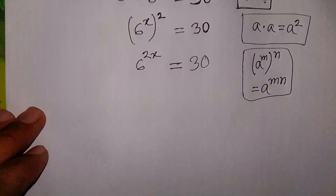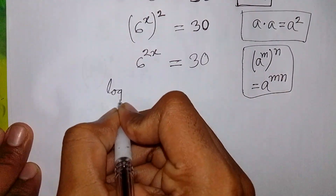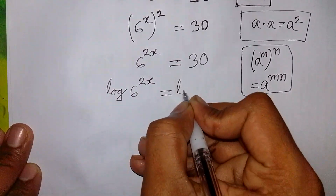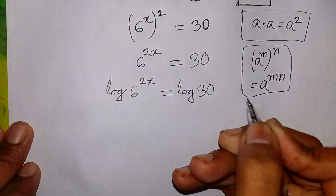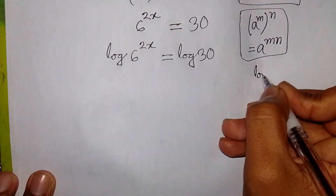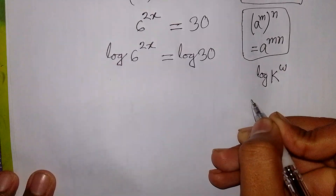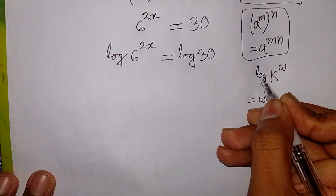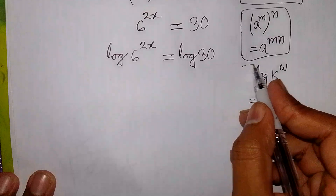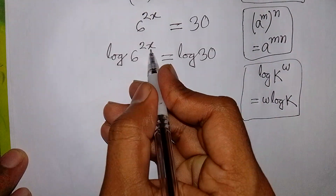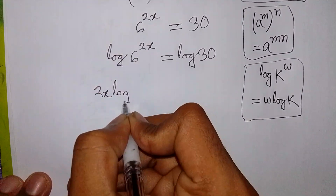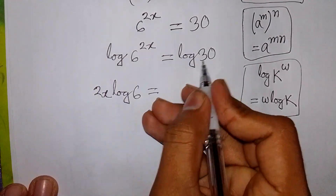Now we take log on both sides. So we can write: log of 6 to the power 2x is equal to log of 30. Here I apply the rule that log k to the power w is equal to w log k. This power 2x will move to the front, so it will be 2x log 6 is equal to log 30.